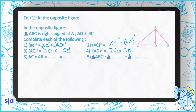Question five: AC × AB = AD × BC. Question six: triangle ABC is similar to triangle DBA, and also similar to triangle DAC.